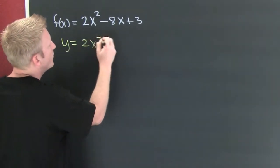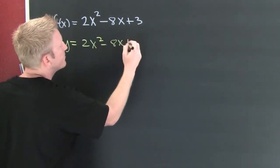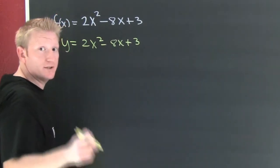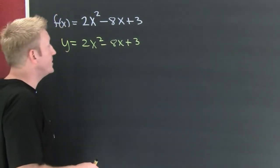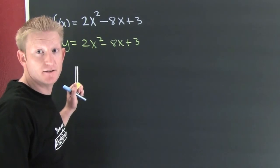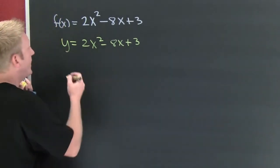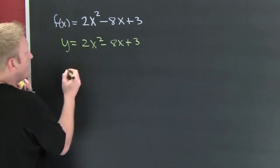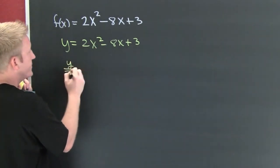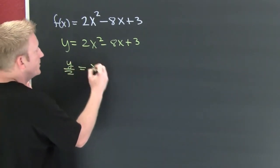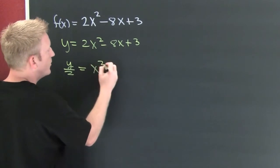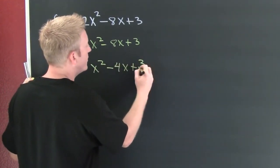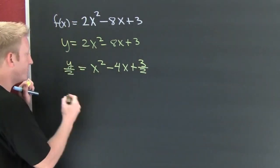So y equals 2x squared minus 8x plus 3. Now I want to get my leading coefficient to 1, because to put it into preferred form you need to complete the square. So I divide everything by 2: y over 2 equals x squared minus 4x plus 3 over 2.